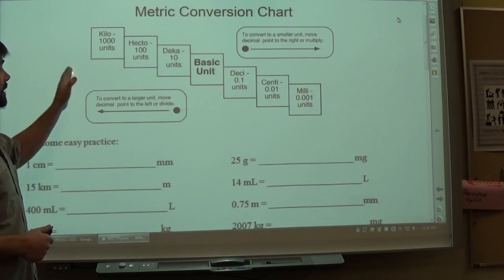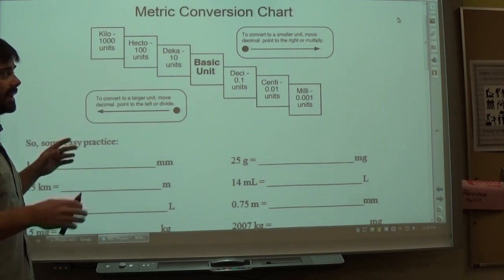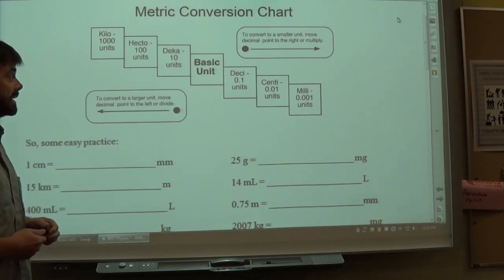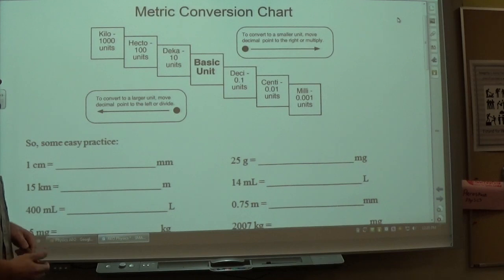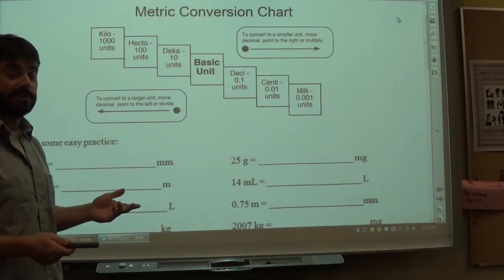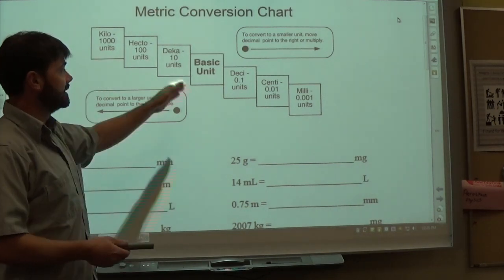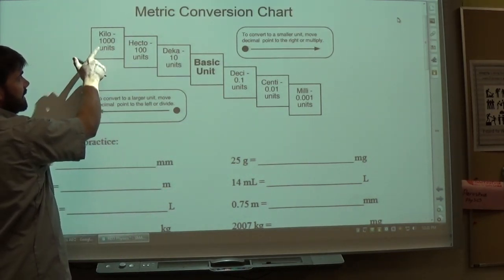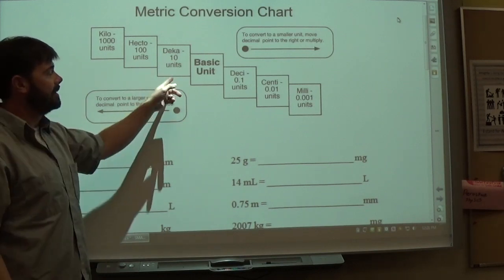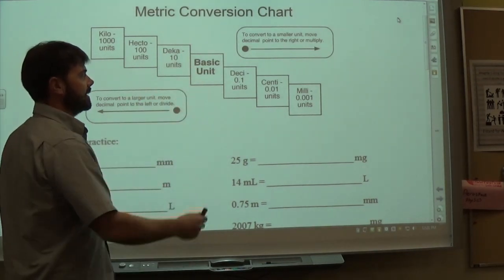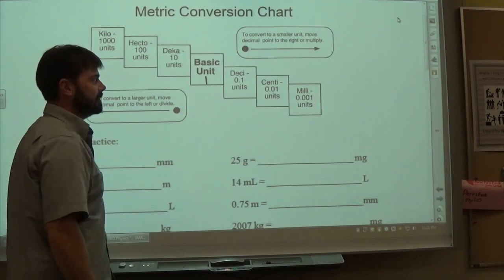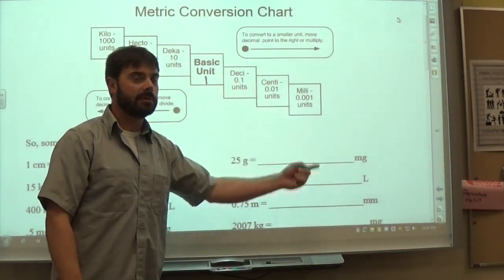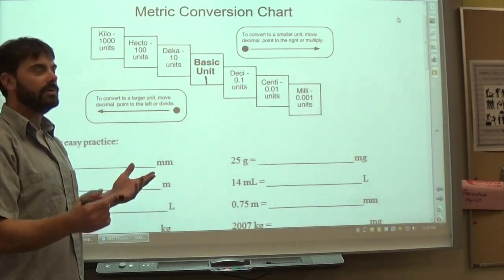We'll look at this and I'll fill out the chart with you. This shows how the metric system and metric conversions actually work. The staircase has prefixes listed from kilo down to milli, showing their values: kilo is a thousand, hecto is a hundred, deca is ten. The base unit has a multiplier of one, and then deci, centi, and milli are a tenth, a hundredth, and a thousandth.